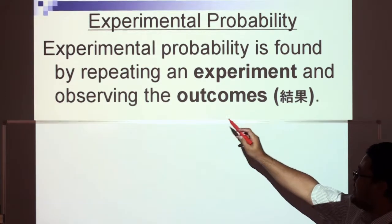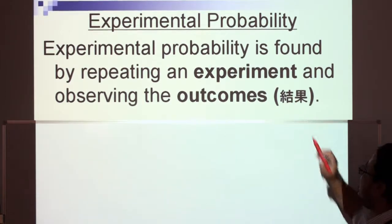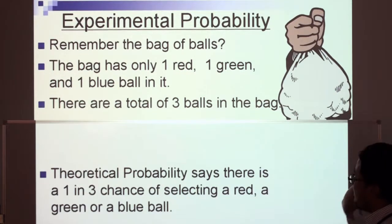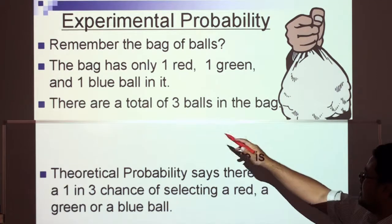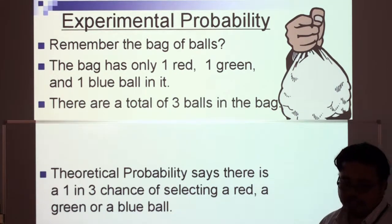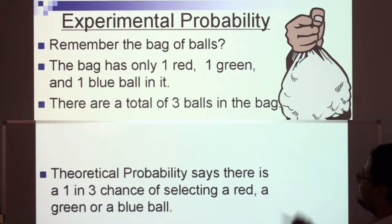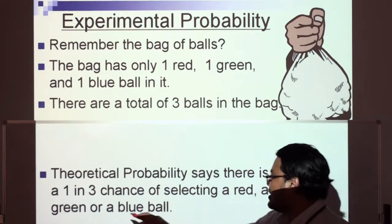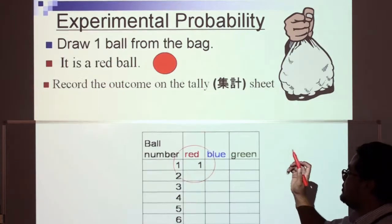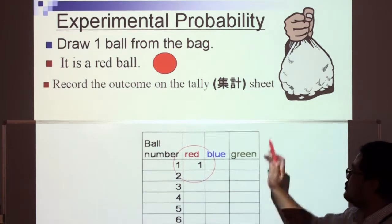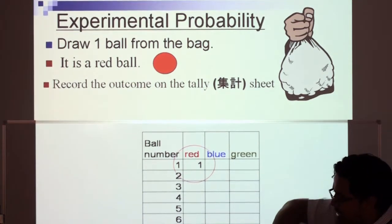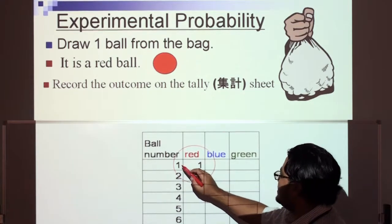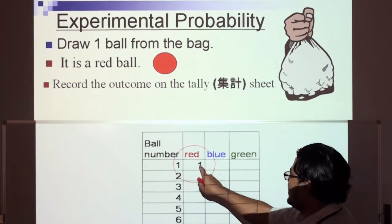Moving on to experimental probability, which is found by repeating an experiment and observing the outcomes. Remember the bag of balls? It has one red, one green, and one blue ball — three balls total. Let's draw one ball from the bag. We draw one ball, take it out — it is a red ball. We record the outcome on the tally sheet. Our first draw: we get one red ball.